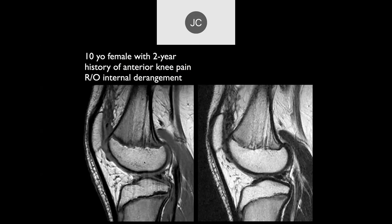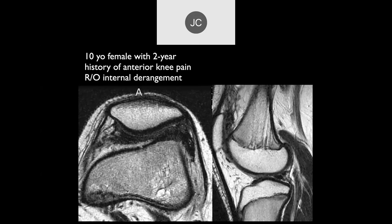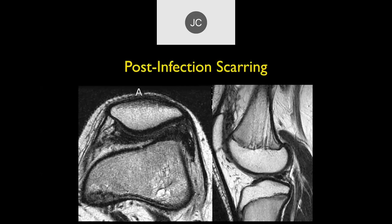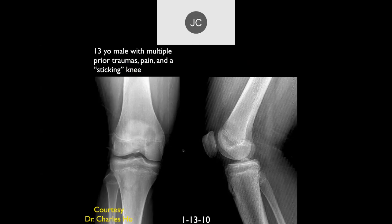A 10-year-old female with a two-year history of anterior knee pain — ruled out internal derangement — shows dark, low signal intensity in the posterior patellar space on sagittal images. The critical history is that this patient was previously treated for methicillin-resistant Staphylococcus aureus. This low signal represents post-inflammatory scarring after treatment for methicillin-resistant disease.